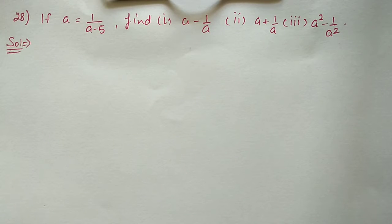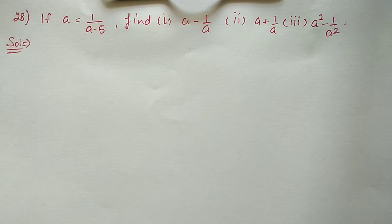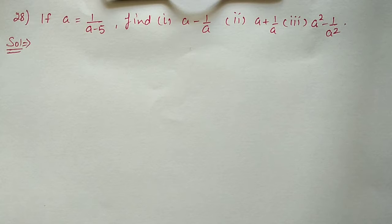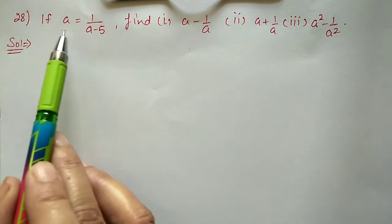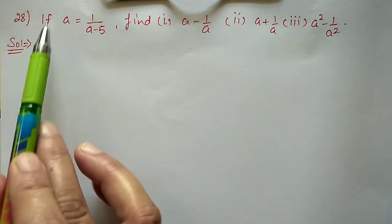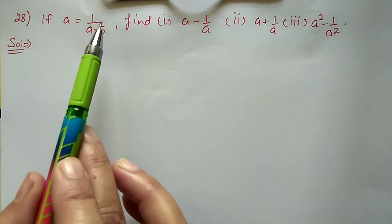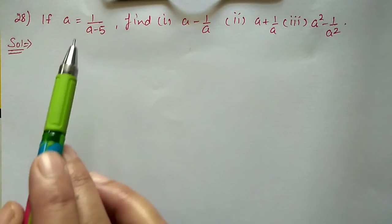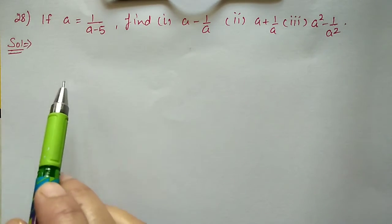Next, question number 28: if a = 1/(a − 5), find the value of a − 1/a, a + 1/a, and a² − 1/a². First we will change the form of this equation into the a + 1/a form.